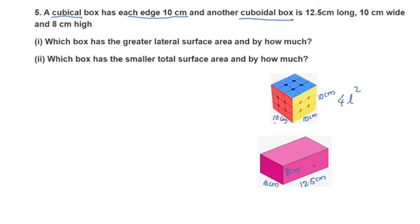If we calculate the lateral surface area for the cube, we will set up two equations — one for the cubical box and one for the cuboidal box. We will find the lateral surface area for each.